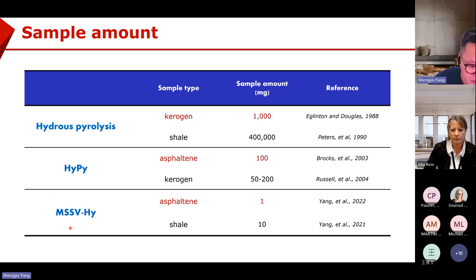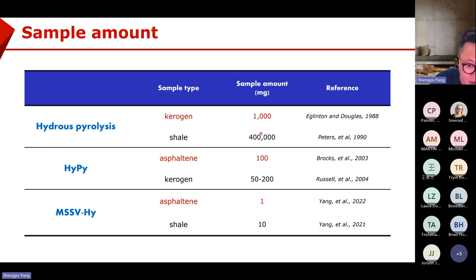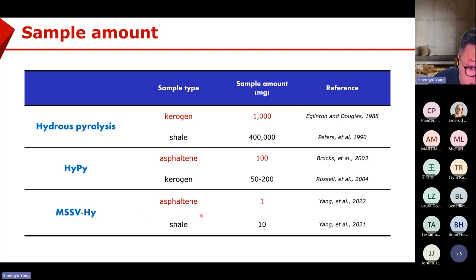Why is MSO-3 better? First, it's easier to use — we don't use the very dangerous hydrogen gas, and it's cheaper. More importantly, the sample amount is much lower compared with HyPy and hydropyrolysis. For MSO-3, just one milligram or half a milligram is enough for biomarker release. This is very important when dealing with very precious samples or very pure asphaltene, which can be quite difficult to achieve.